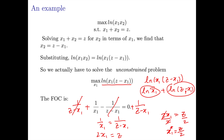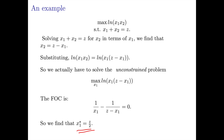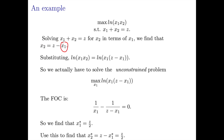That's our optimal value of x1. To finish, we just need to find the optimal value of x2. We go back to the equation x2 equals z minus x1, and plug in our optimal value of x1, which is z over 2. So the optimal value of x2 is z minus z over 2, which is z over 2. And that's how you maximize a concave function of two variables. That wraps up our refresher course on the math you'll need for your courses. Feel free to ask your instructors any questions you might have.